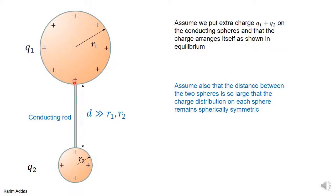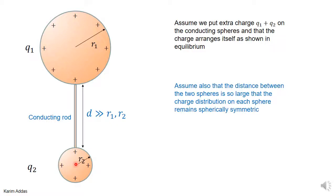We're assuming the distance between the two conducting spheres is very very large, much bigger than the radii of both spheres. This allows us to assume — and it's a big approximation — that the two spheres don't affect each other. To get the potential and electric field near one sphere, we only have to worry about that conductor alone. It's a simplistic model, but let's see what it gives us.